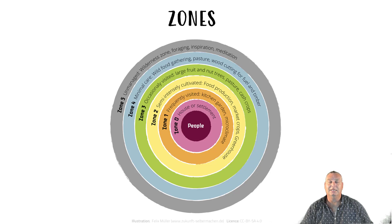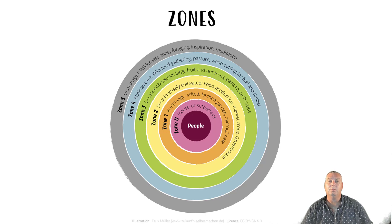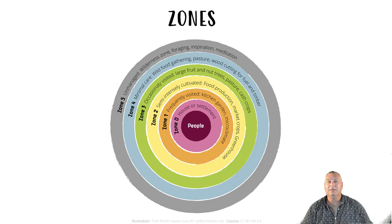Normally zones are shown like this — a concentric circle moving from the centre outwards — with the first and the centre being people, or zone 00 as some people like to call it, through to zone 0 which is the house where most of the energy is being spent, through to zone 1 where we're spending at least four to five times a day, zone 2 where we're looking at anywhere between once a day to several times a week, through to zone 3 once a week or several times a month, zone 4 once a month to once every six months, and zone 5 where we go occasionally not to do anything except to go out and learn within that landscape.